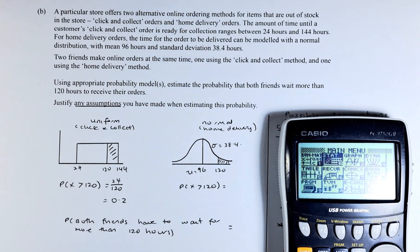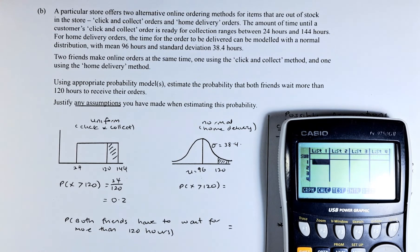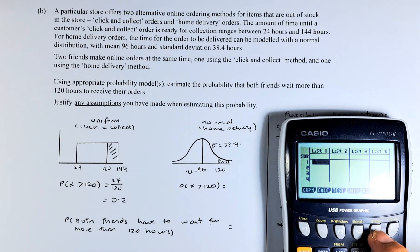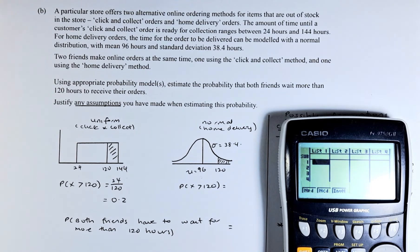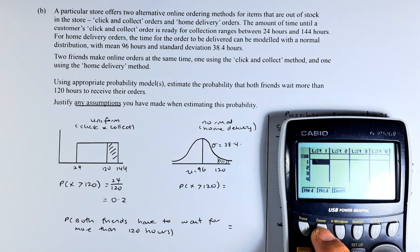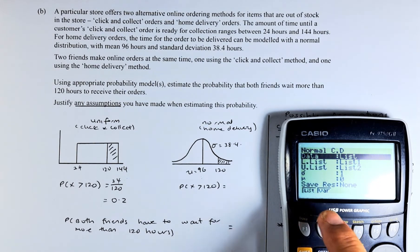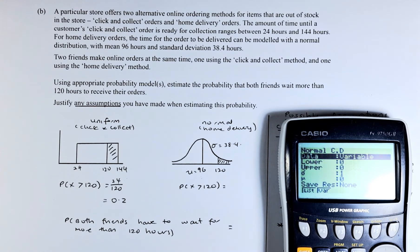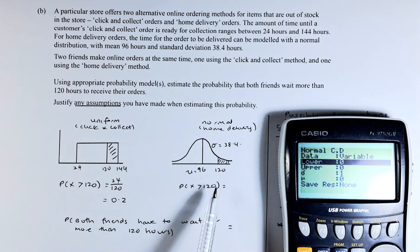Again we go to the graphic calculator, statistics, execute, then distribution F5. Because we are doing normal, press F1 normal. Remember, normal is always NCD, so we're going to do F2. Now we're going to key in the data. Remember we always put in a number using variable instead of list, so we're going to put F2 to variable. Now we are going to start entering the data.